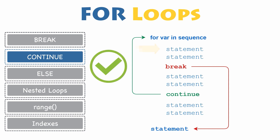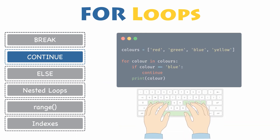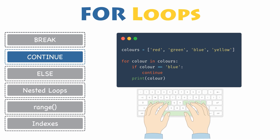The Python continue statement will immediately terminate the current loop iteration. The execution jumps to the top of the loop and re-evaluates the expression to determine whether the loop will execute again with the next iteration, or if it will terminate and proceed to the first statement following the loop, like it would with the break reserved keyword. Let's have a look at the same example you have seen in the break statement, but instead of break, you will now use the continue statement.